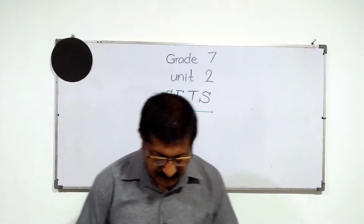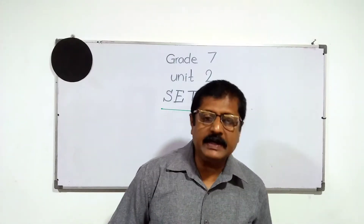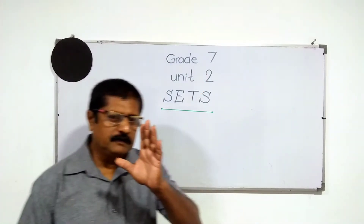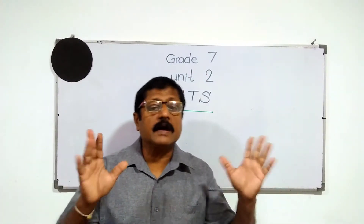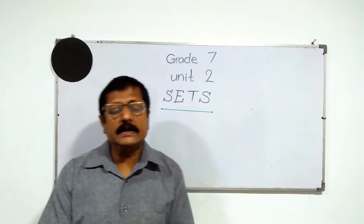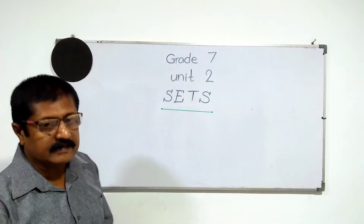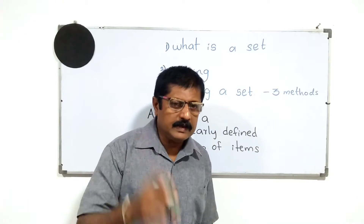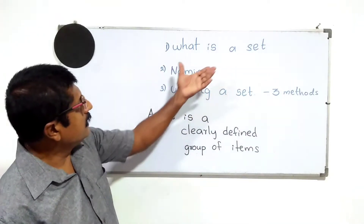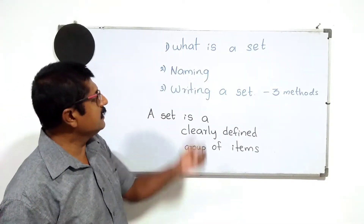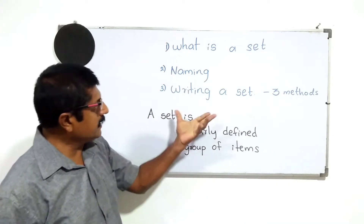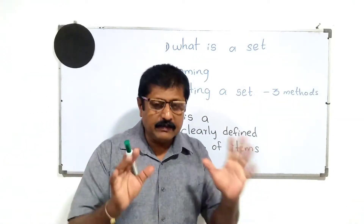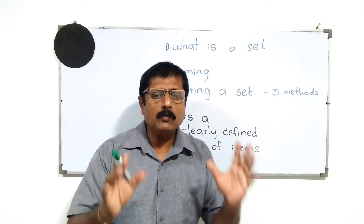Wishing you all a very good day, my dear children. Today we are going to discuss Grade 7 Unit 2: Sets. First of all, let's see what types of things we have to learn by studying this lesson. When we learn this unit, we have to discuss: what is a set, then naming a set, and writing a set. There are three methods of writing a set. Let's consider these topics one by one.